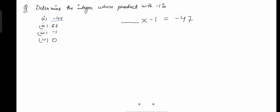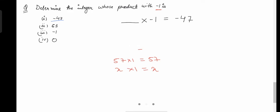Now a very easy method. Over here we have a number as 1. You should know that no matter what number you multiply with 1 — for example, 23 multiplied by 1 gives 23, or 57 multiplied by 1 gives 57. No matter what number you multiply with 1, you will get that number back. So the simple rule is: any number multiplied by 1 gives that number itself.